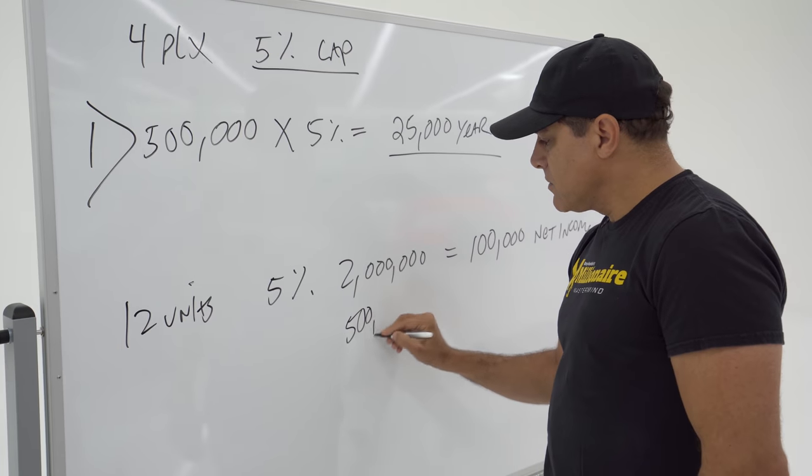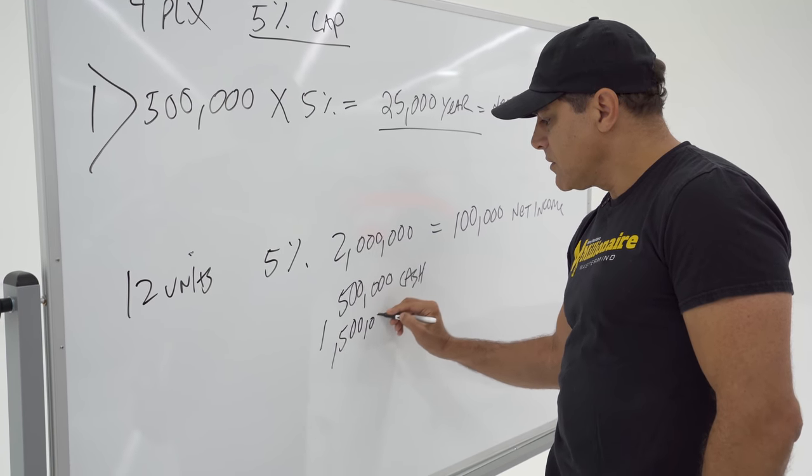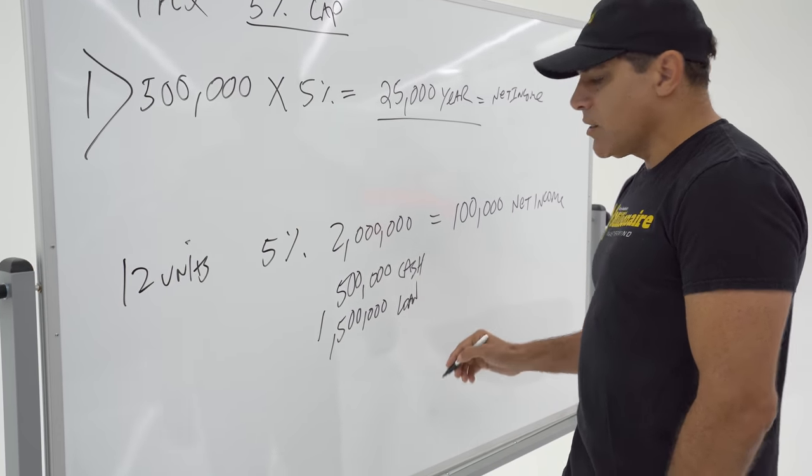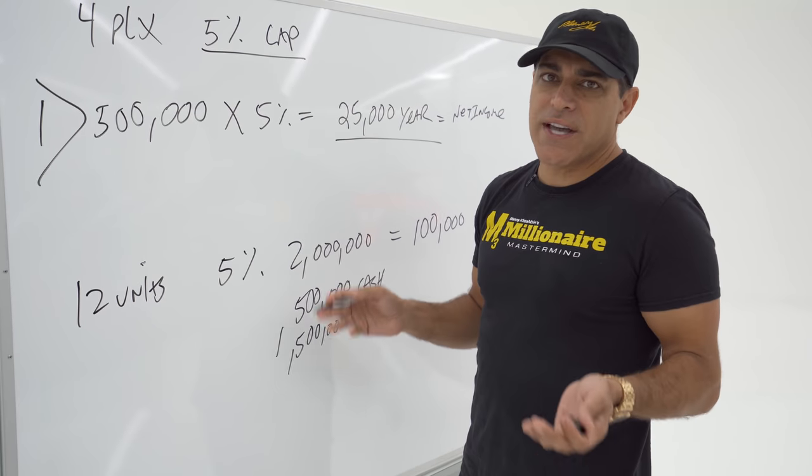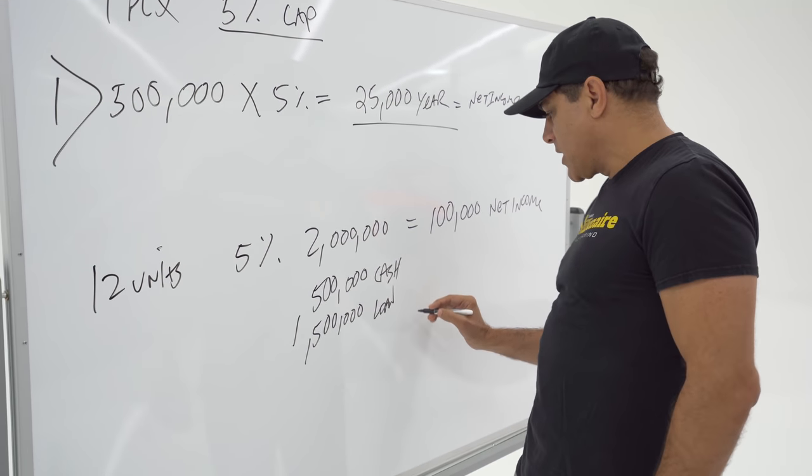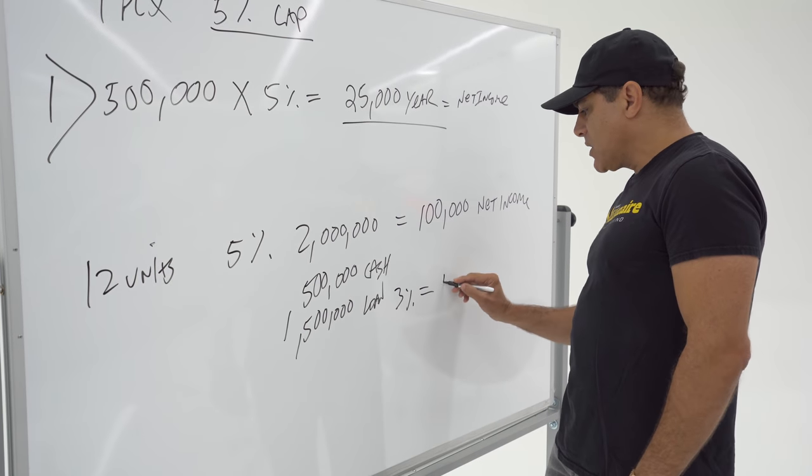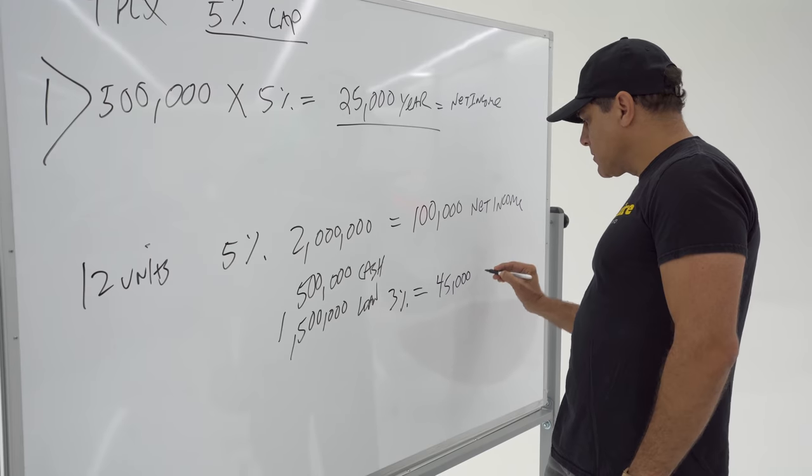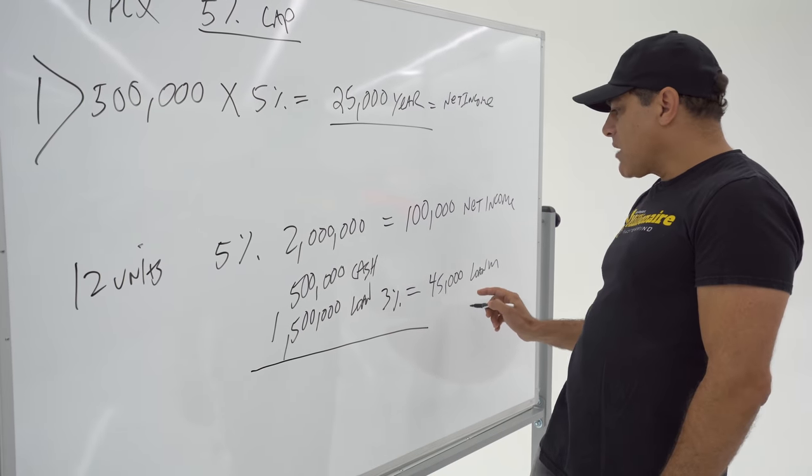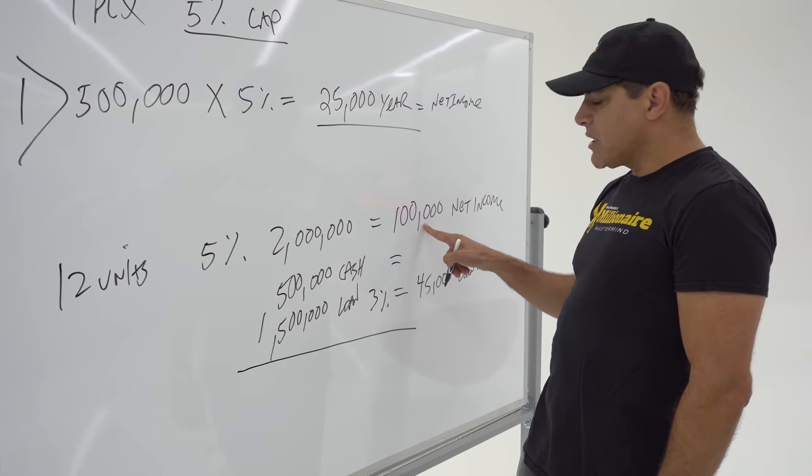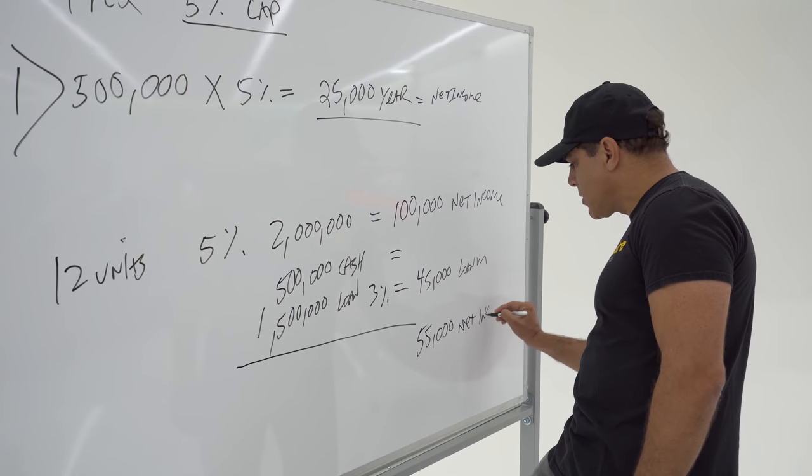Now if you put $500,000 cash and you borrow $1.5 million loan, and loans are about 3% on multifamily. Lenders are very aggressive because they love it. It's the lowest risk asset class in real estate as a collateral. So let's say 3% loan. So you're basically going to pay $45,000 a year for your loan payment. 3% of $1.5 million, $45,000. What you have here is $45,000 minus $100,000 income, which leaves you $55,000 net income after your loan payments.